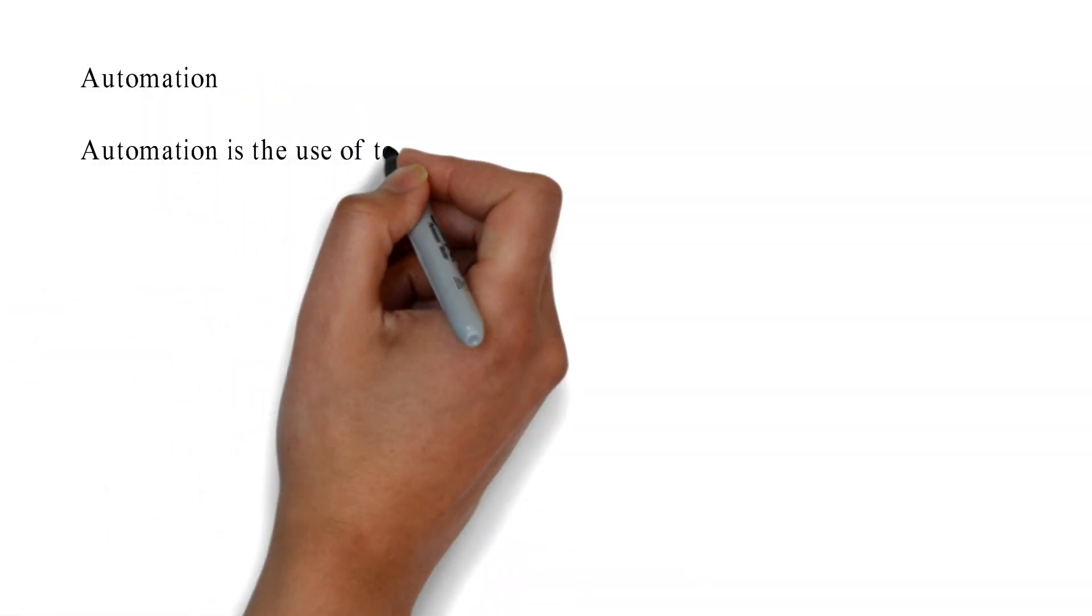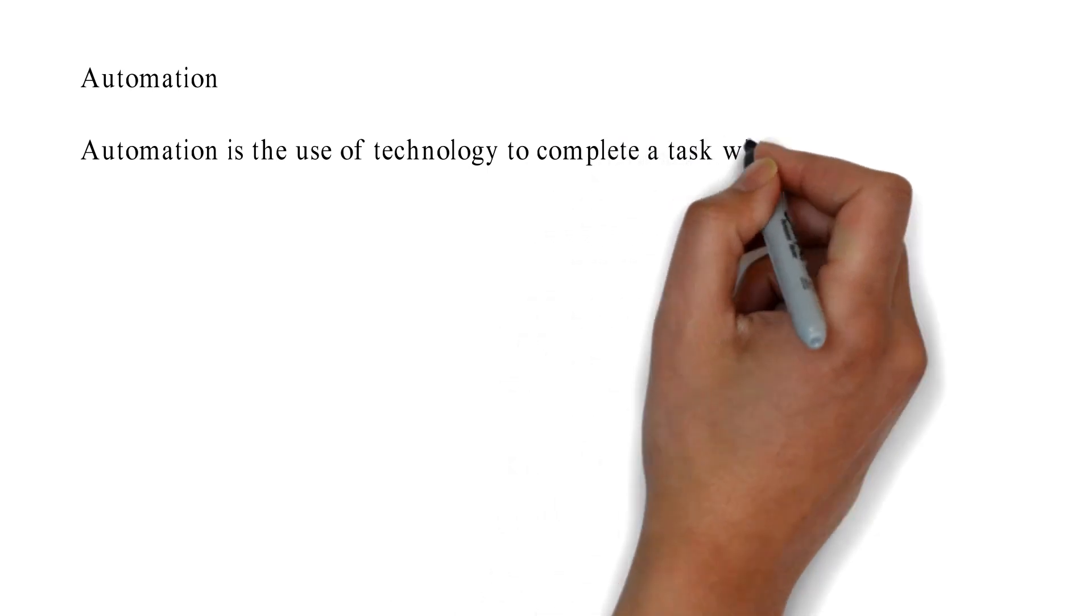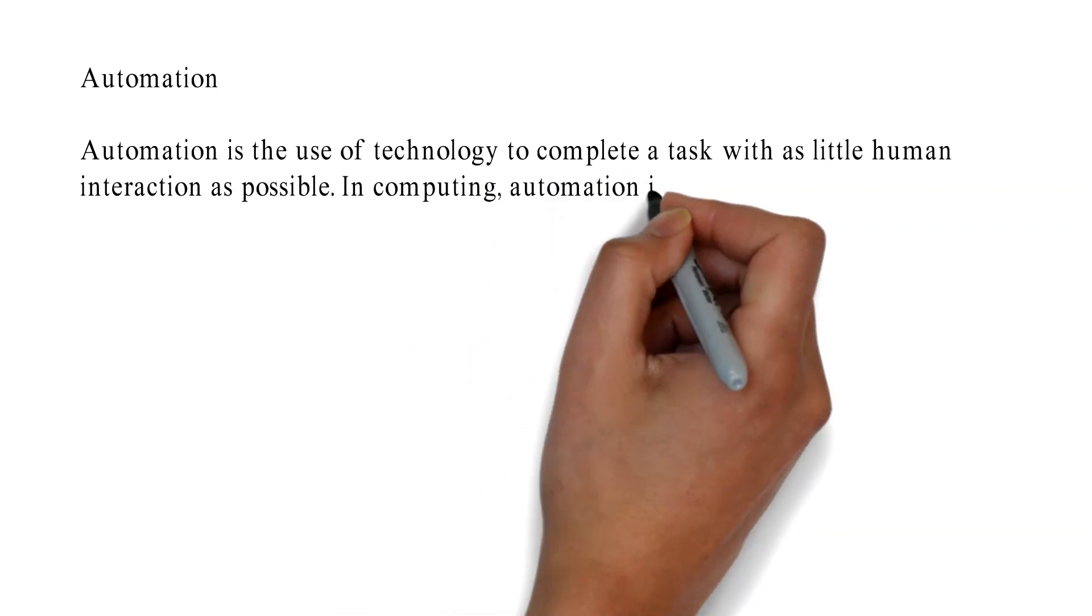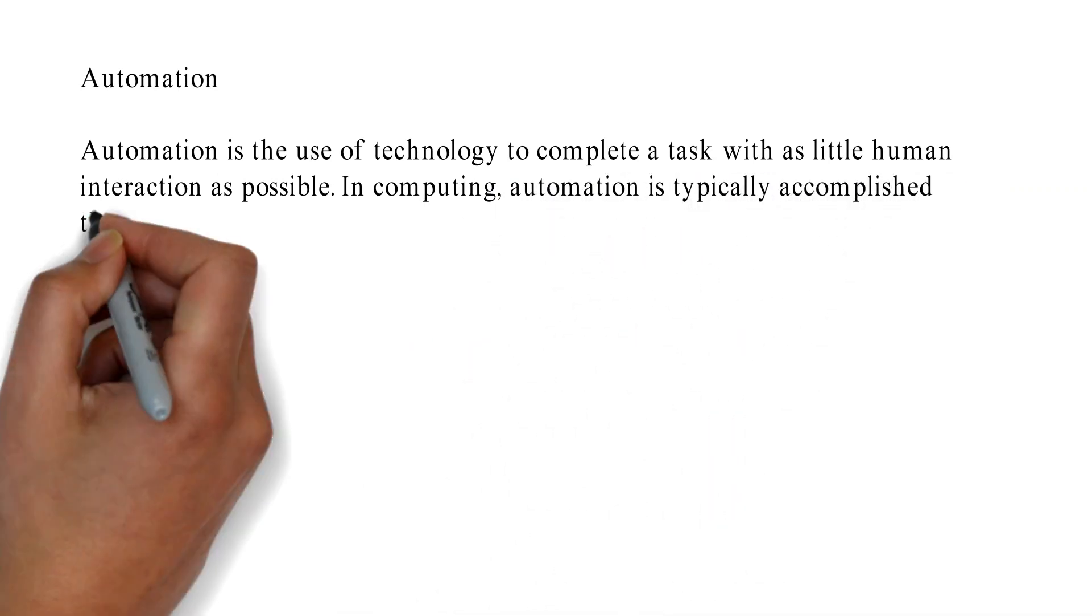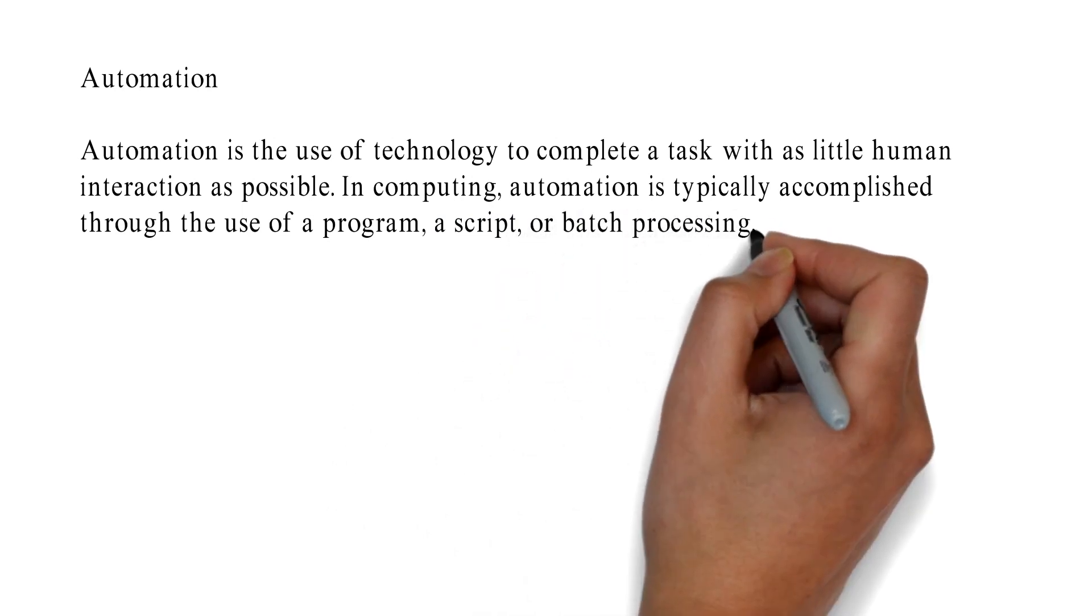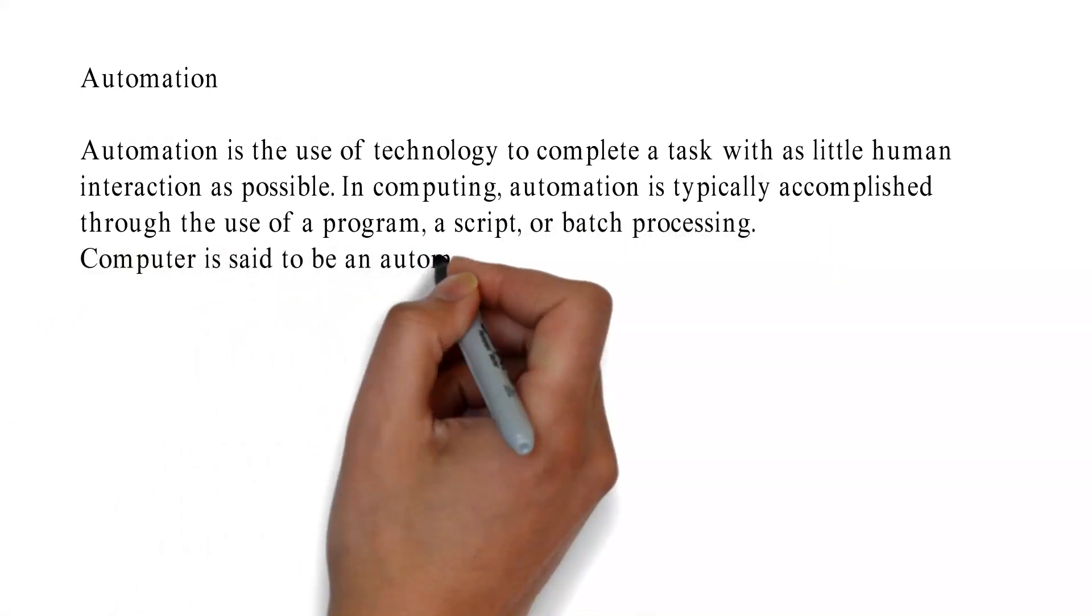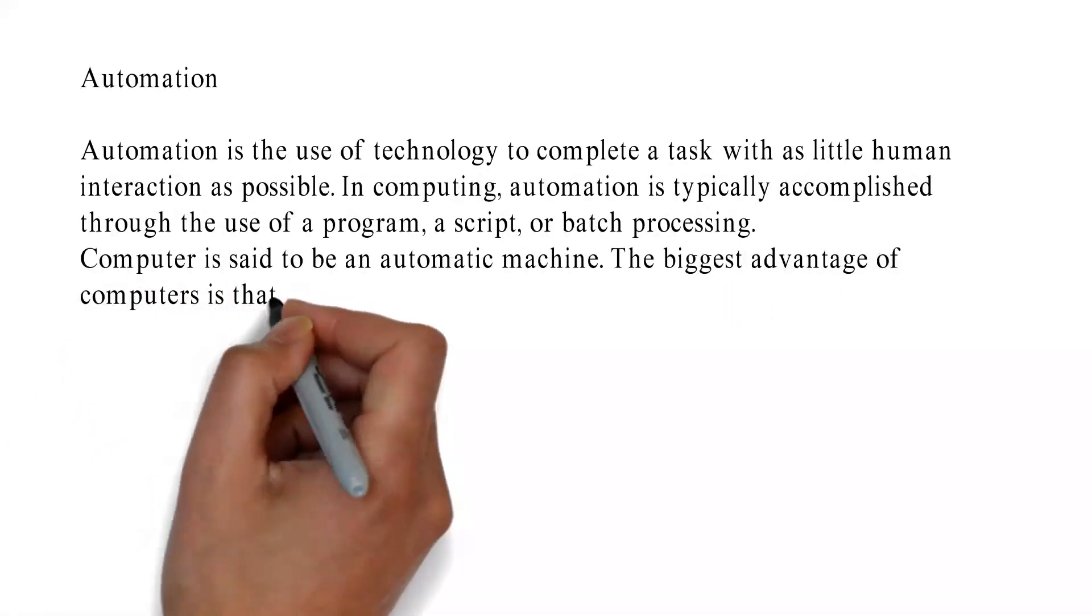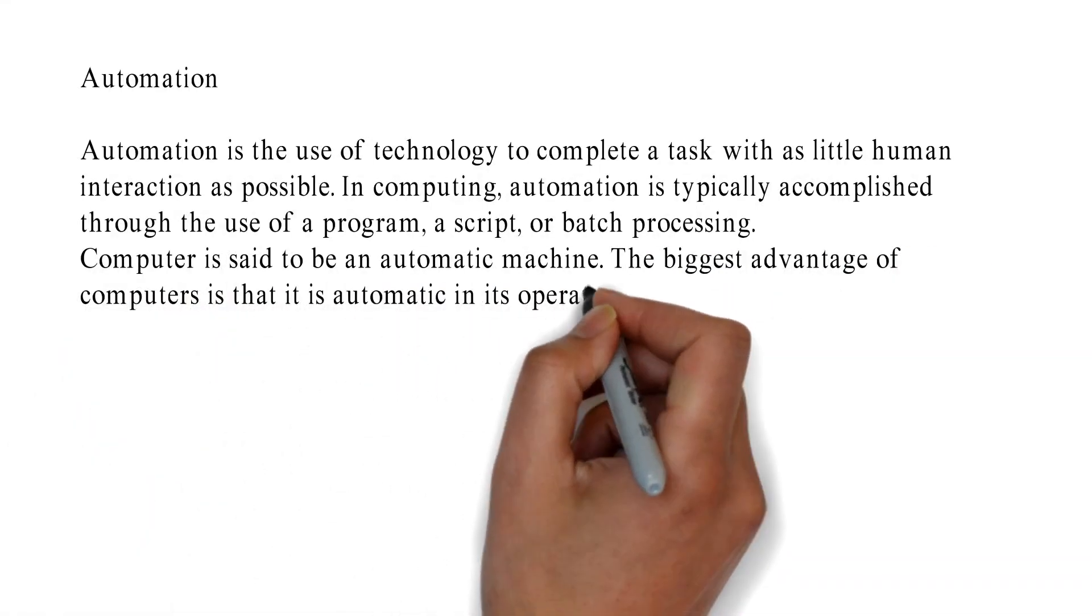Automation: Automation is the use of technology to complete a task with as little human interaction as possible. In computing, automation is typically accomplished through the use of a program, a script, or batch processing. Computer is said to be an automatic machine. The biggest advantage of computers is that it is automatic in its operation.